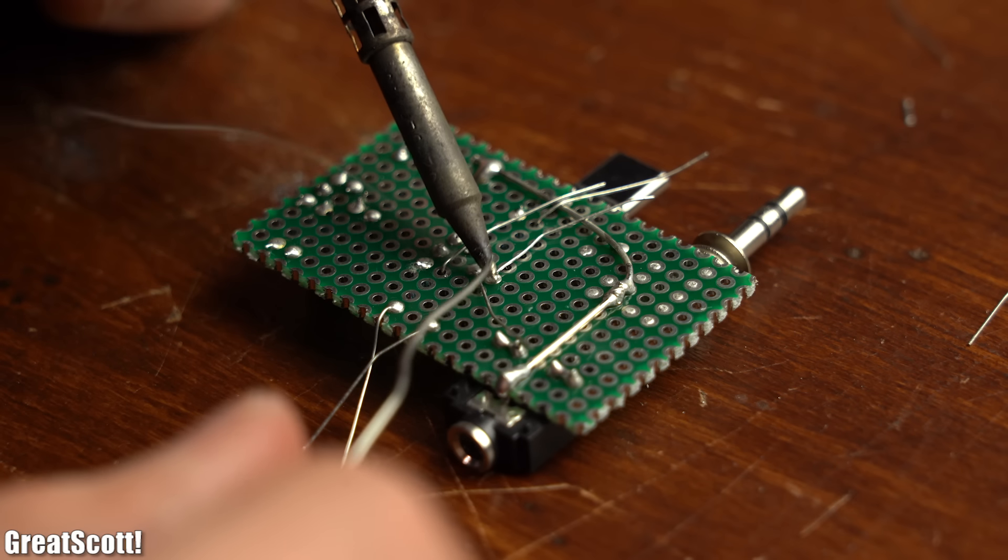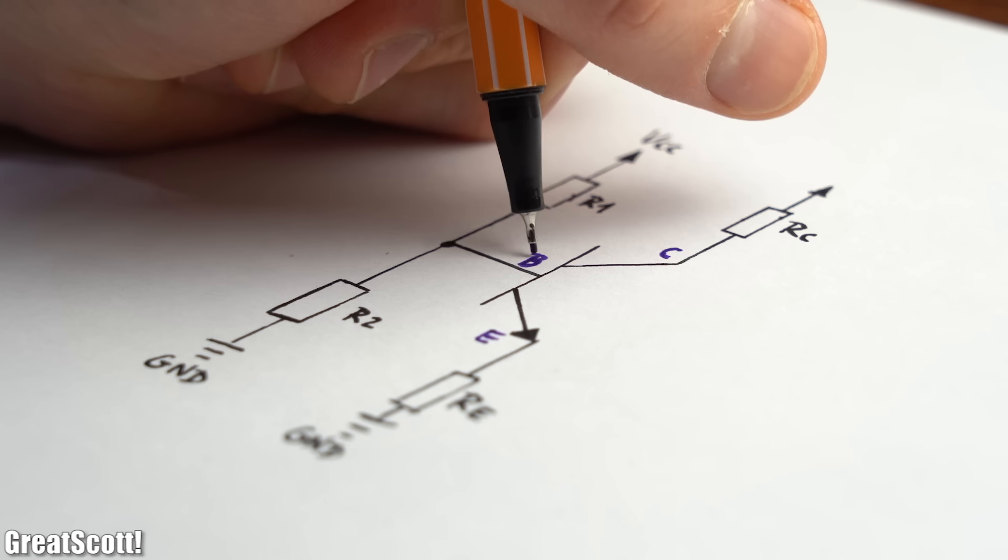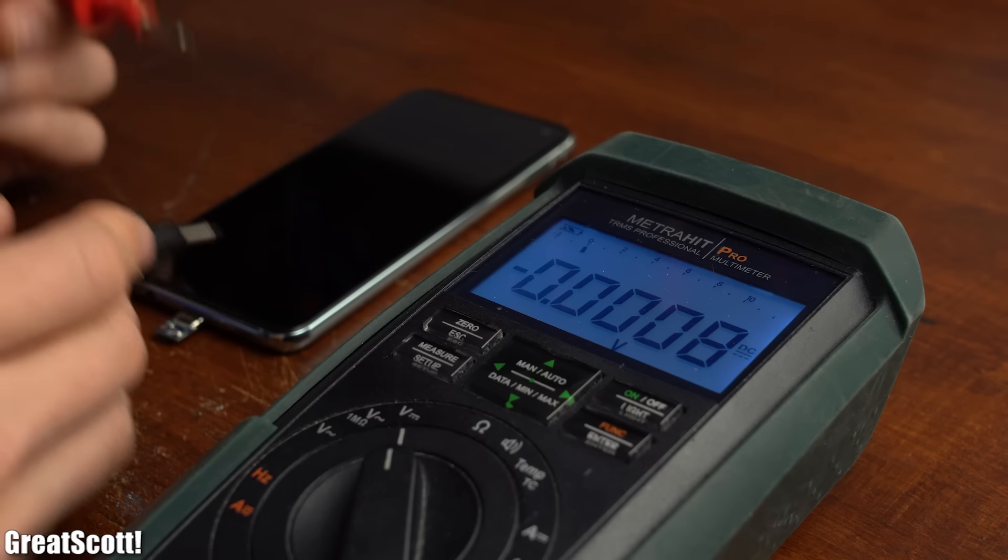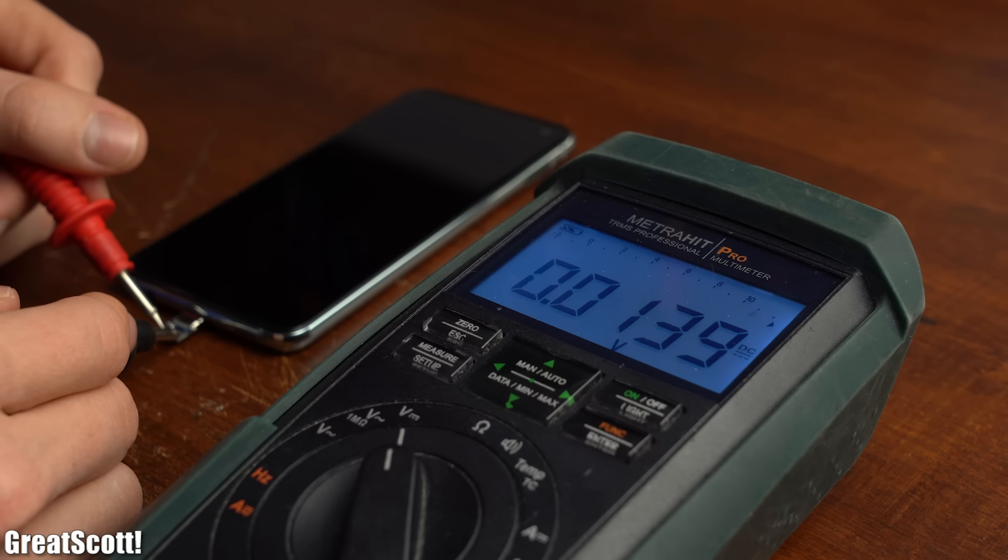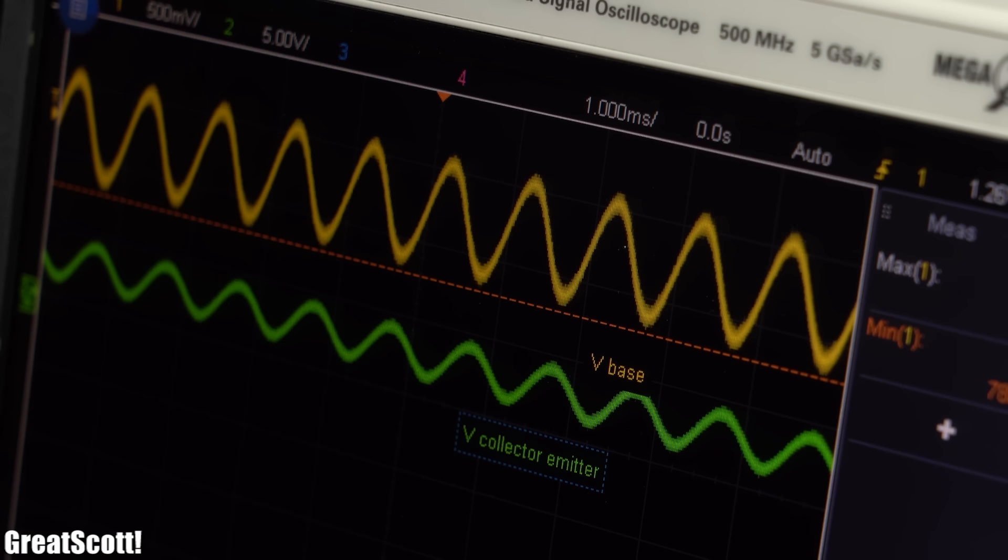Along the way I will not only tell you how to easily build such a class A audio amplifier, but I will also tell you how to get 5V power from your phone's USB Type-C port. Let's get started!